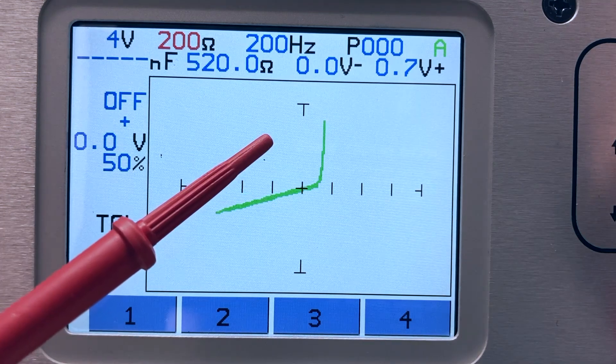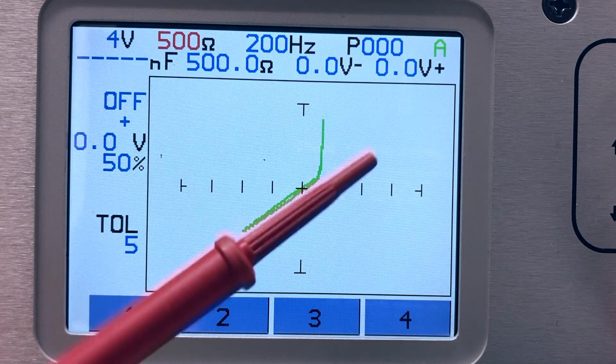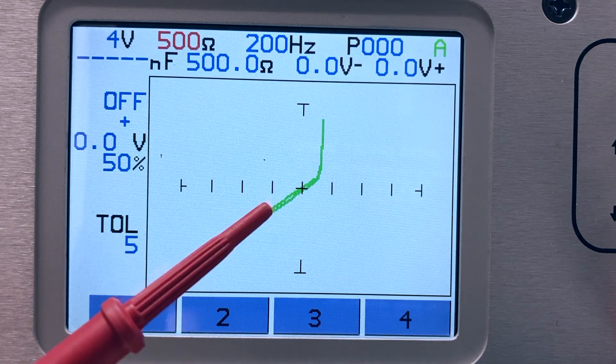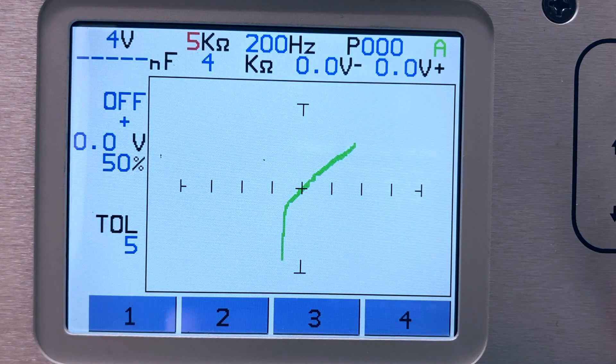Sometimes the internal short has very low resistance. The resistance of this transistor base to emitter short is around 500 ohms. Internal shorts can also have a higher resistance.